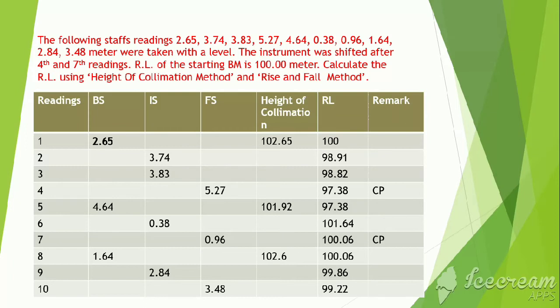Here in the problem, 10 readings are there in which after 4th and 7th readings, the change points are there. So, accordingly, the first reading is at backside and the last reading is at foresight. And the 4th and 7th readings, as they are the change points, are taken at the foresight. And immediately after 4th and 7th, the 5th and 8th readings are at backside. Then, accordingly, the calculation has turned.